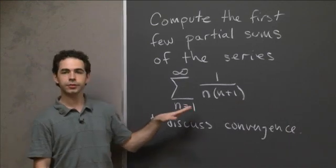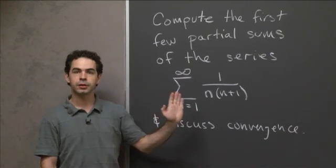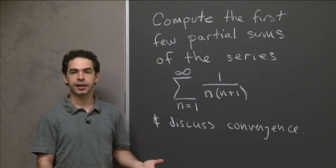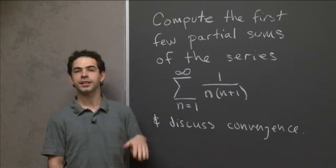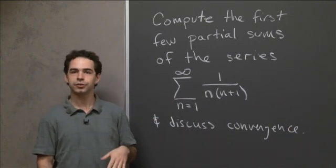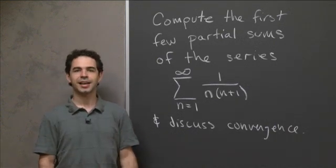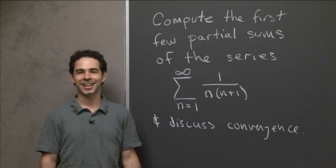So what I'd like you to do is to compute a few terms of the series, compute a few partial sums, and use that to get a sense for what you think the series is doing. Is it converging? Is it diverging? If it's converging, can you figure out what value it's converging to? So why don't you pause the video, take some time to try that out, see what you get, come back, and we can do it together.